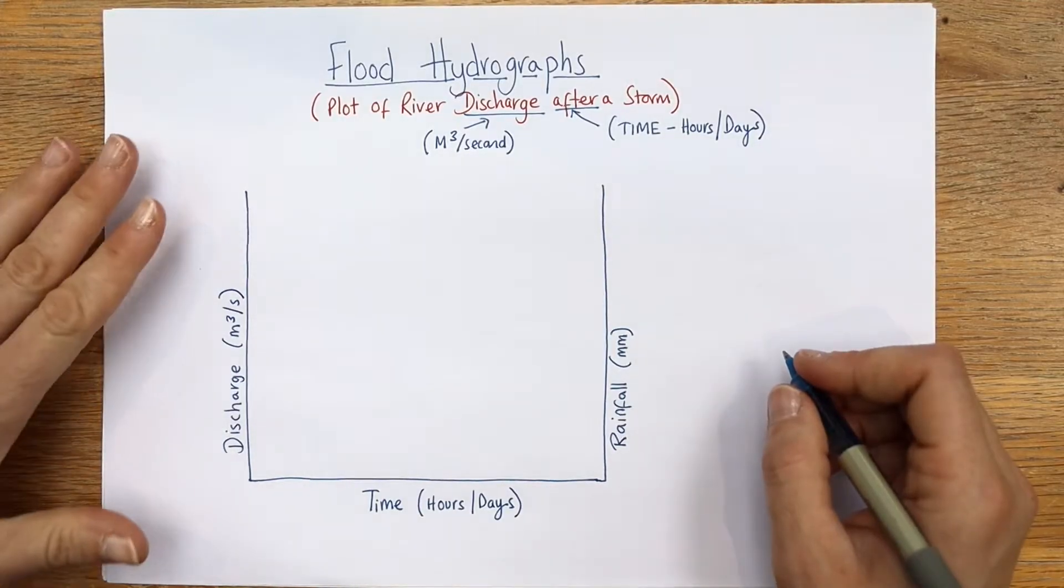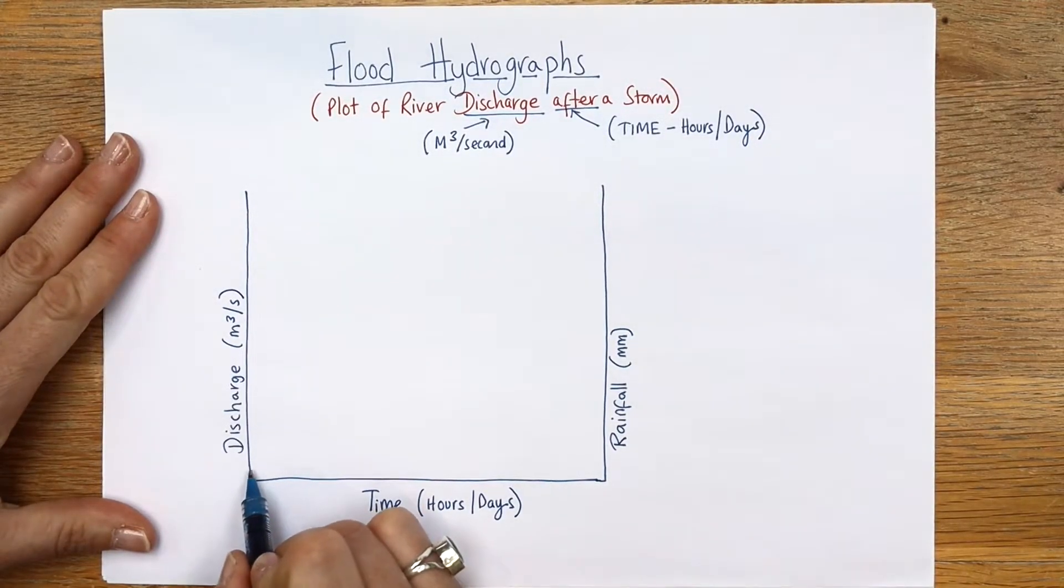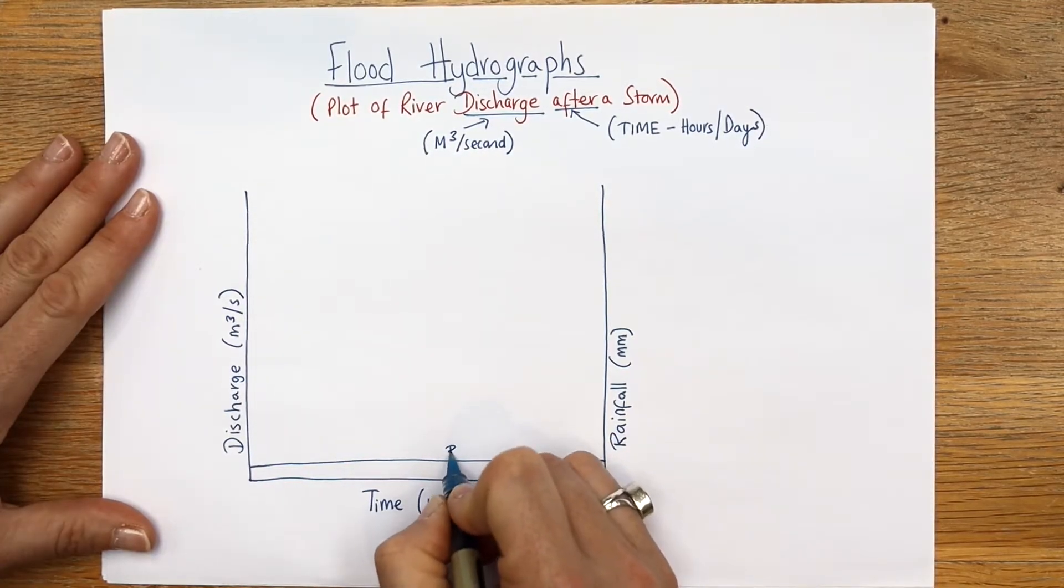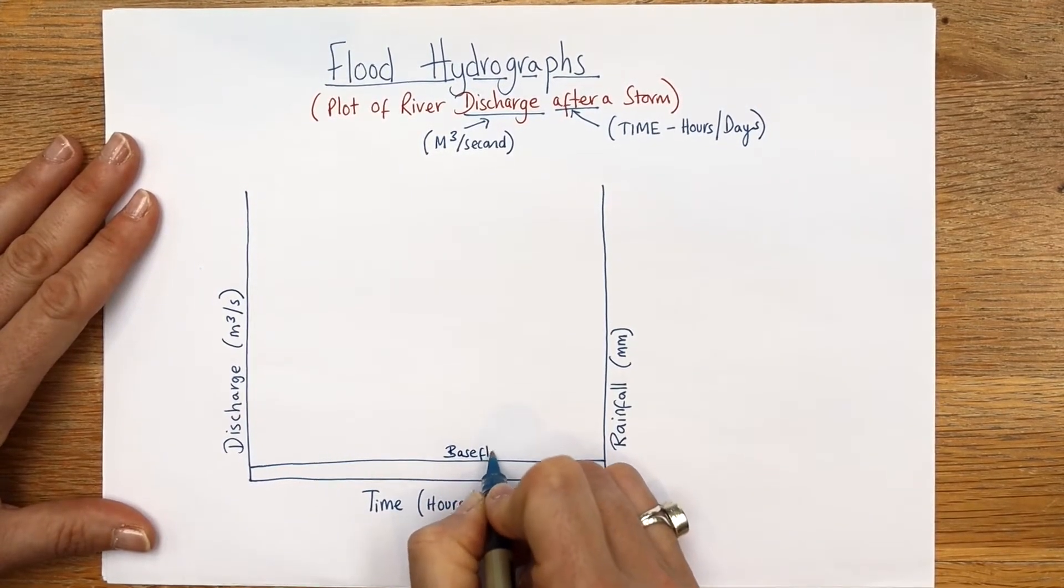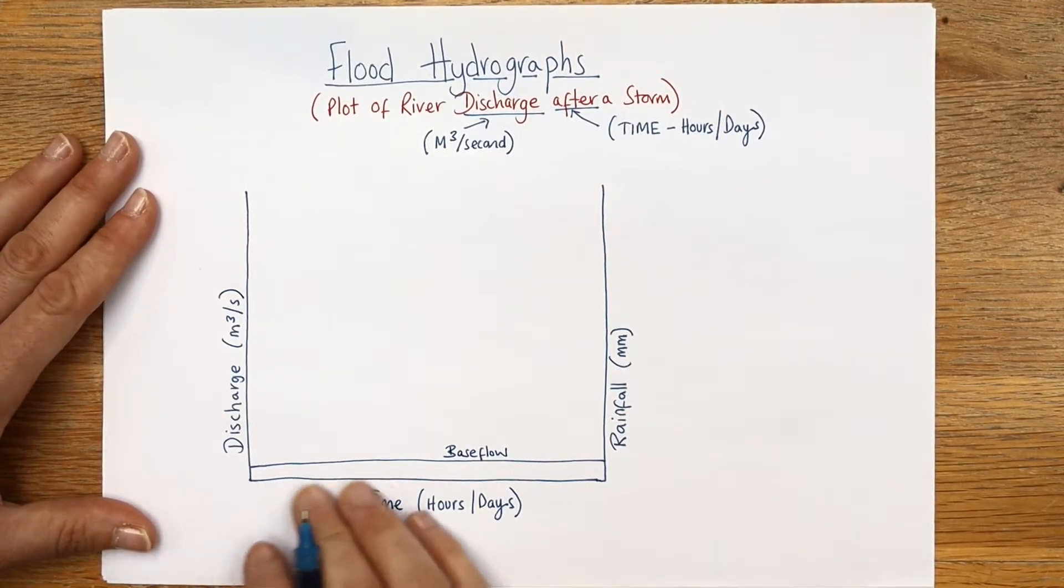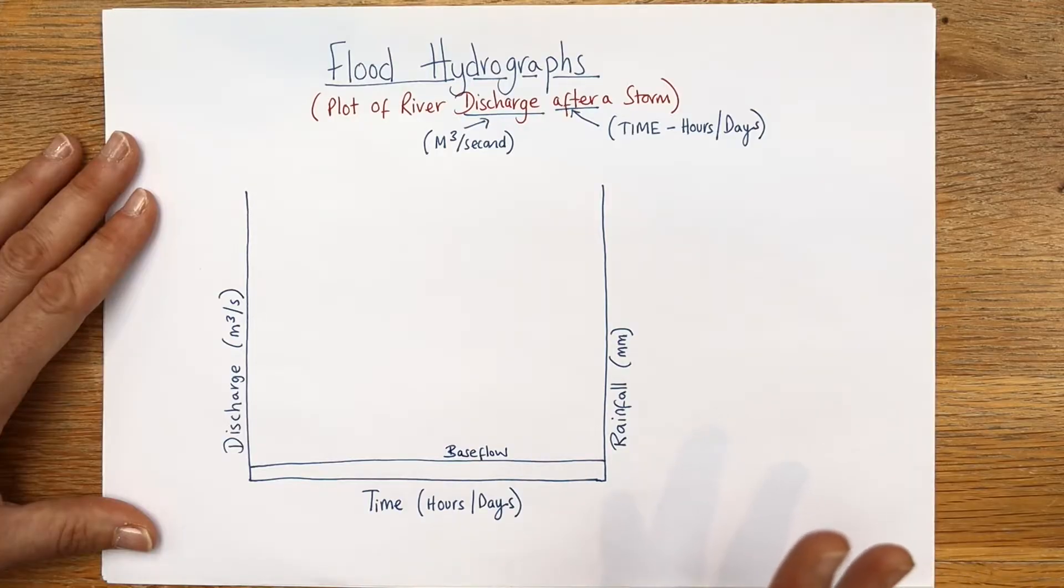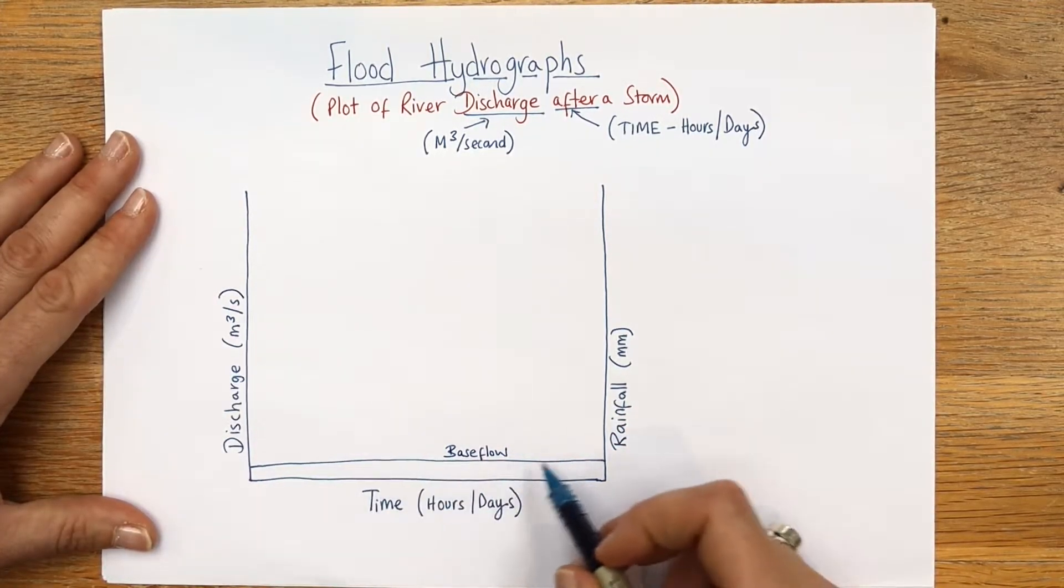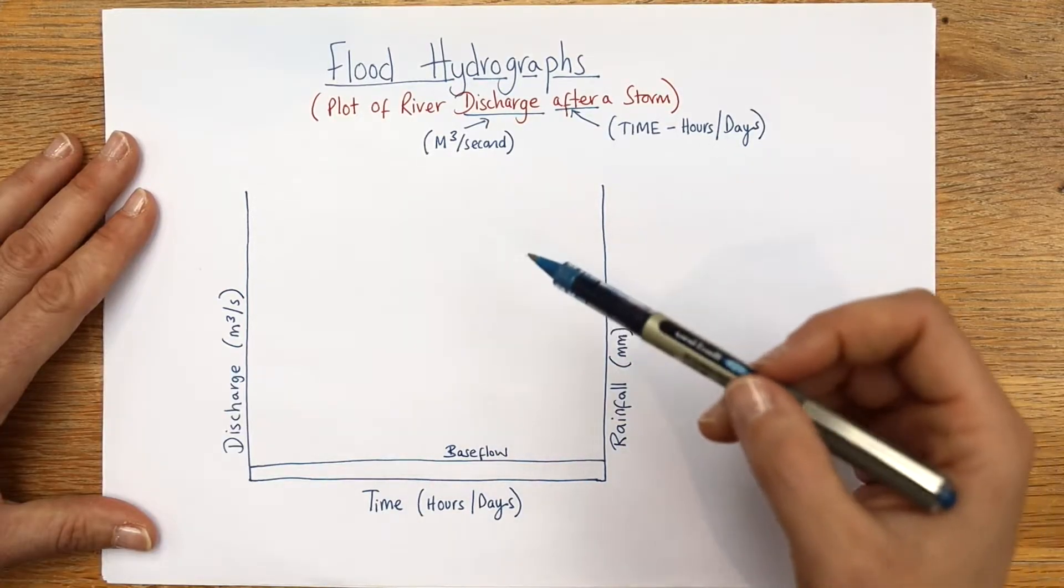Now the base flow of the river - just going to put that in first, let's pop it there - and we're going to label that base flow. This is what the river does under normal circumstances, so normal amounts of rain, it's steady, there's not too much water being pushed out. There's no flood event.